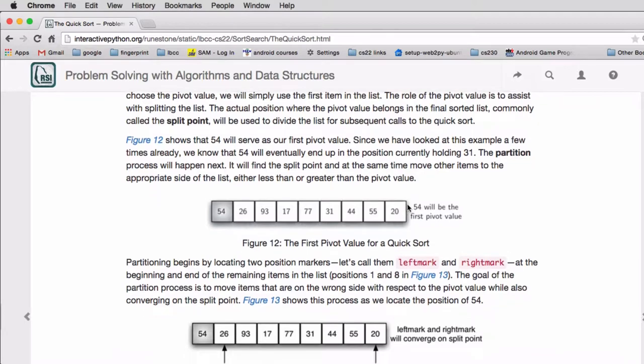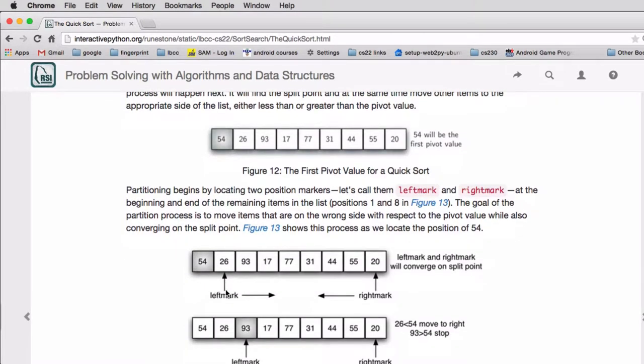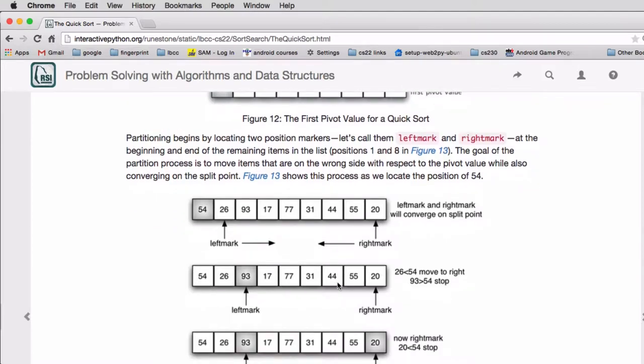So the way we do this is we pick 54 and we use an index to start on the left side and an index to start point to the right side. So we're pointing to the two ends of the remaining list.